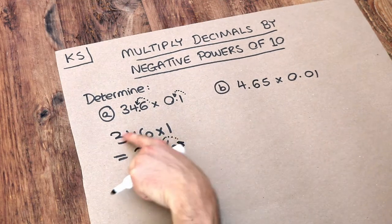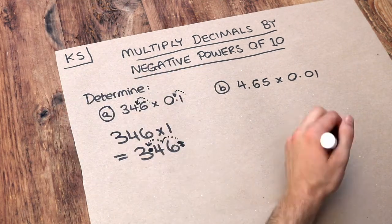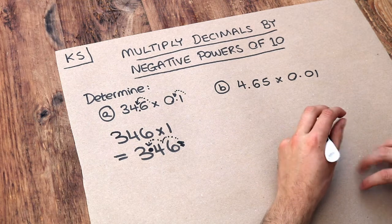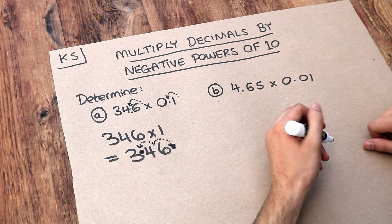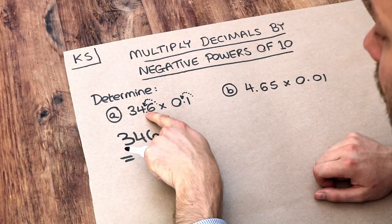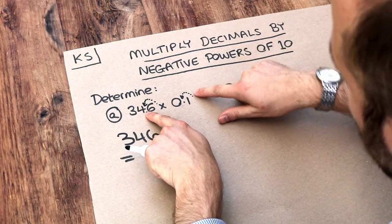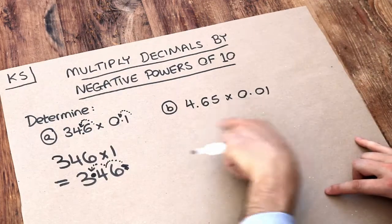Now obviously we don't need to do 346 times 1 because it's obviously 346. So whenever you're multiplying by 0.1 or 0.01 or 0.0001, all you need to do is just move the decimal point in this number by how many times the decimal point has moved in this number. So if we take this number here,